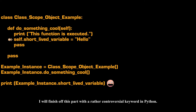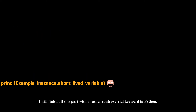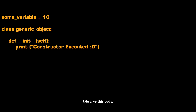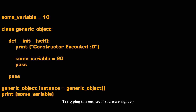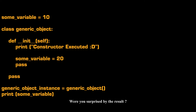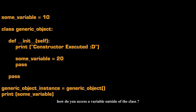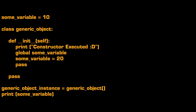I will finish off this part with a rather controversial keyword in Python. Observe this code. What do you think will be the output? Try typing this out and see if you were right. Were you surprised by the result? Or should I say, the error? This begs the question: how do you access a variable outside of the class? The answer is the keyword global. Type this in — you will see that it works now.